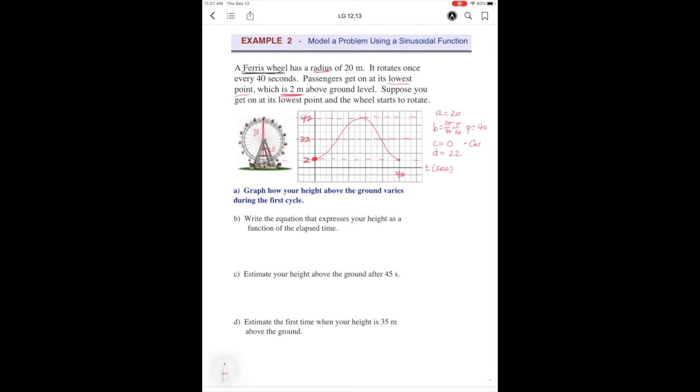All right, so there's a quick sketch. Now let's write the equation. We got all the ingredients there, so it's going to be y equals negative, because it's going to be a cos negative, and it's going to be π over 20, and you can use x or t, plus the midline 22.